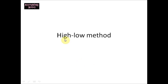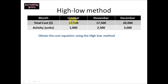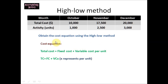This video contains an exercise on the high-low method. We have 3 months — October, November, and December — along with the total cost and activity in terms of units produced for each month. In this exercise, we need to obtain the cost equation using the high-low method. The cost equation is: total cost equals fixed cost plus variable cost per unit, or TC = FC + VCx, where x represents units.